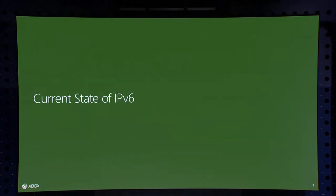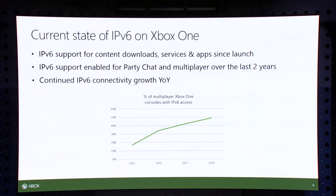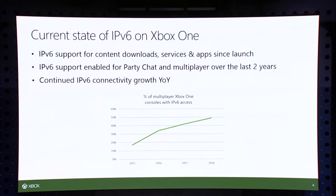A couple years ago when we last presented, we covered that IPv6 has been supported on Xbox One since launch. It's been primarily used for content downloads, services, and apps. App streaming over IPv6 has been a big driver of traffic on operator networks, as well as content downloads for games and game updates.